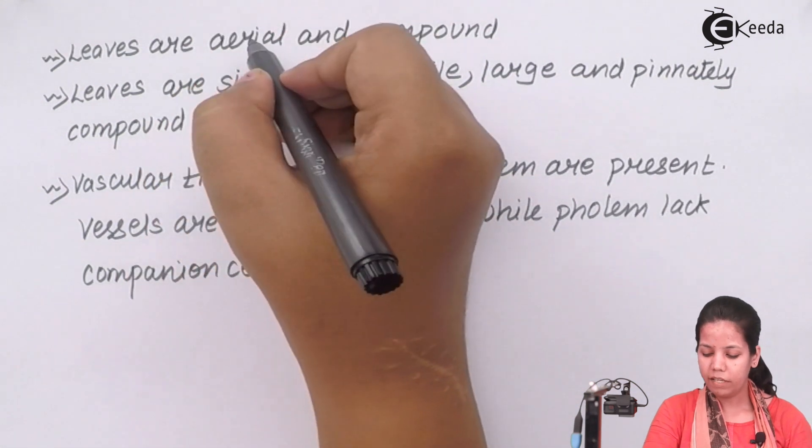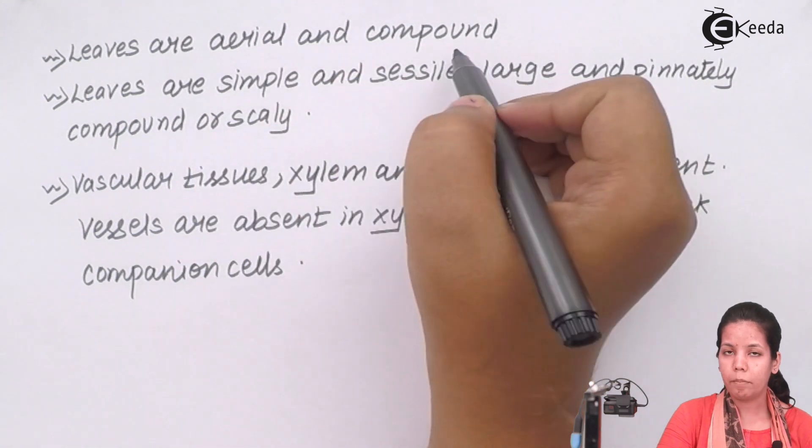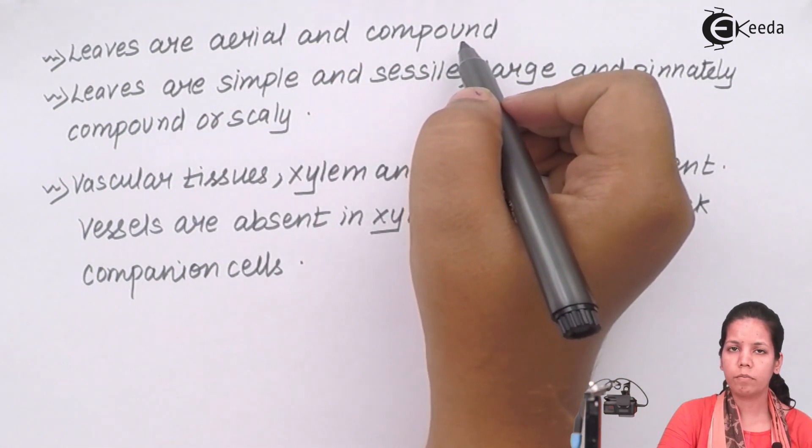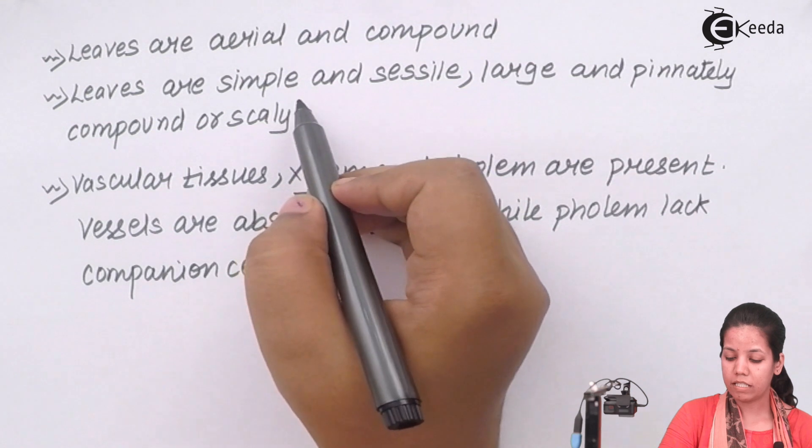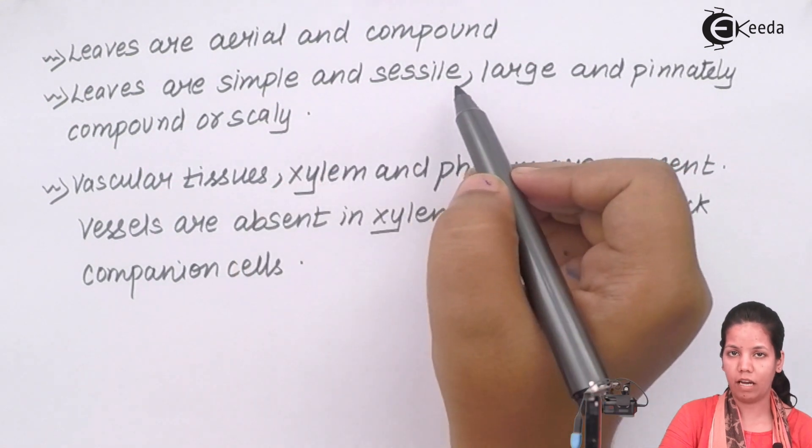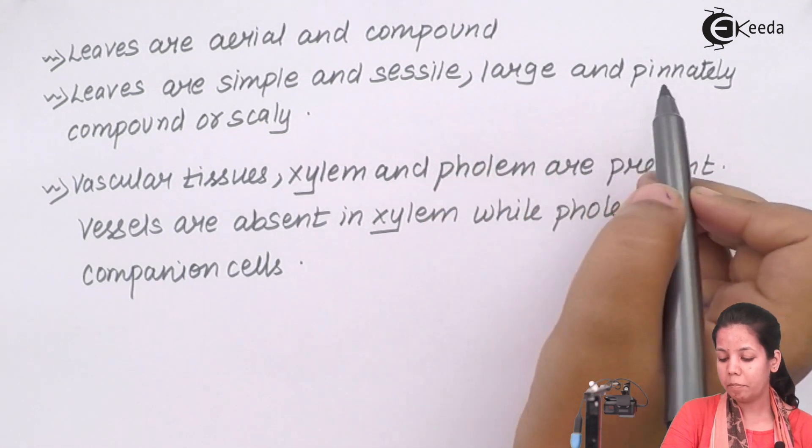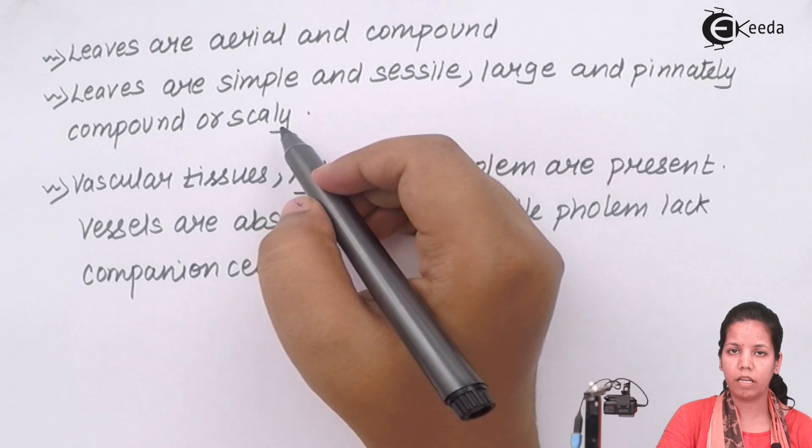Now leaves in pteridophytes are basically aerial and they are compound leaves. Now compound leaves or this kind of leaves basically have their venation or veinlets in associated forms. The leaves are sometimes simple and sessile also. When I say sessile, they are kind of weak. And large and pinnately compound leaves or scaly leaves are also present in this pteridophyte family.